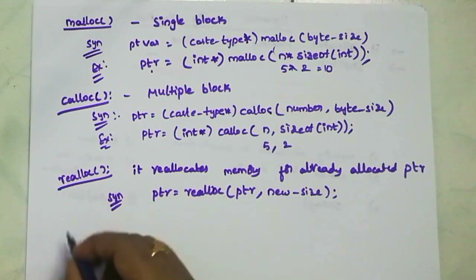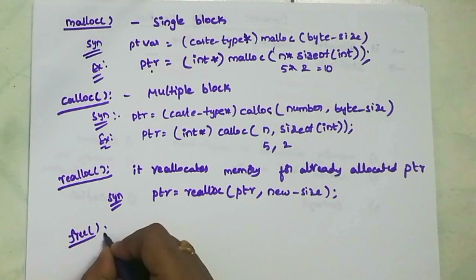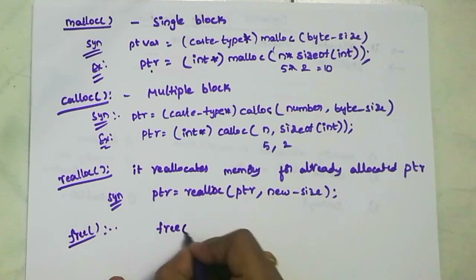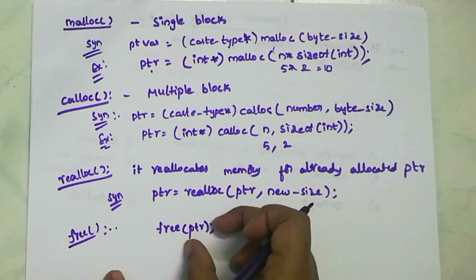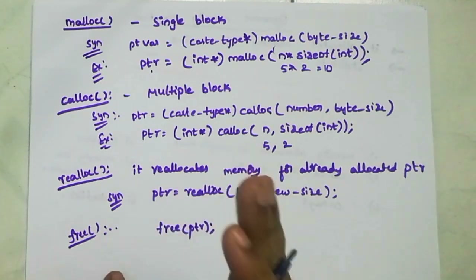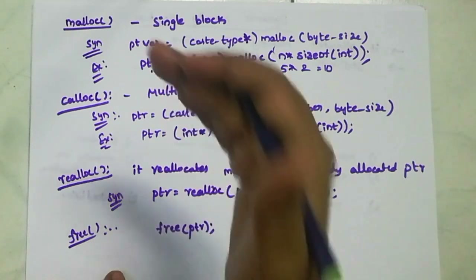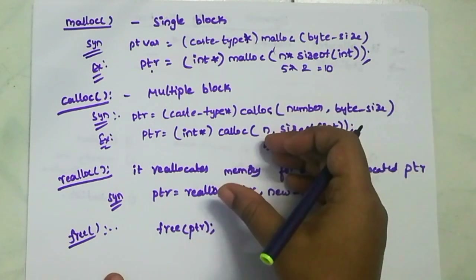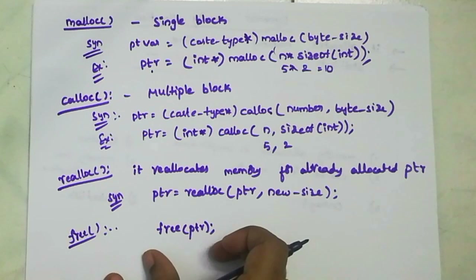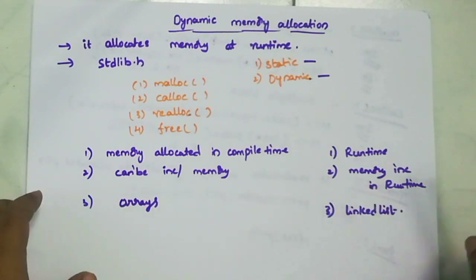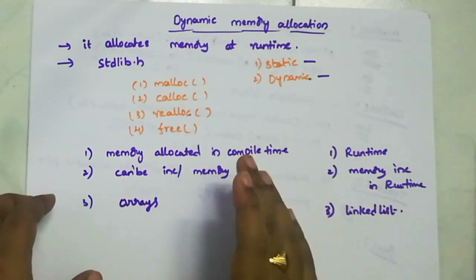Next is the free function. free(ptr) is used to release dynamically allocated memory. Free means the complete memory allocated by malloc, calloc, or realloc through the pointer is freed up and released. So free(ptr) frees the dynamic memory allocation. This is the total concept of dynamic memory allocation. Next, void pointer examples have been done. Thank you.